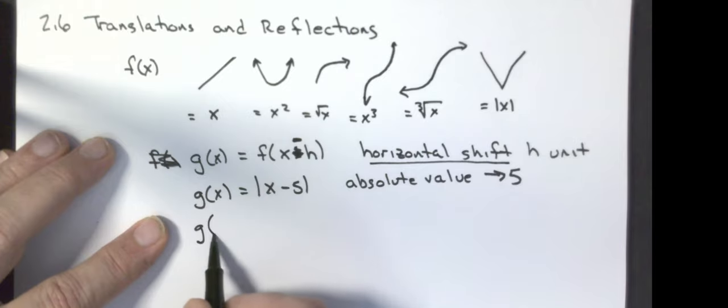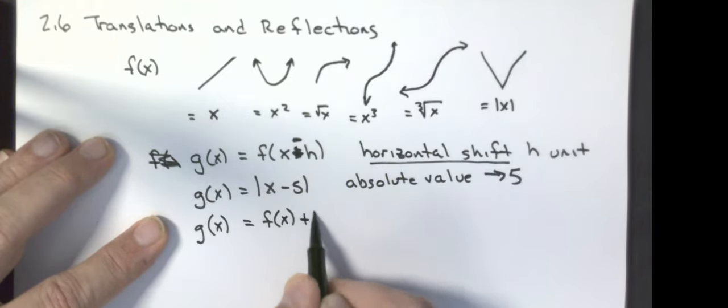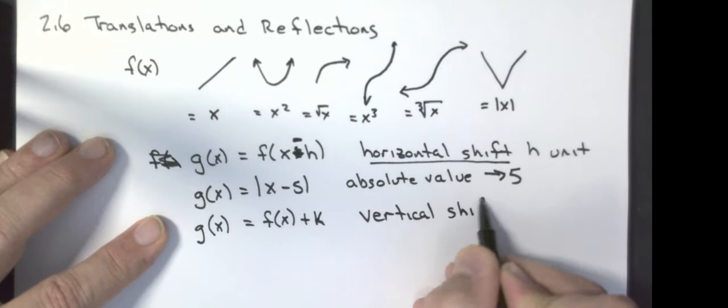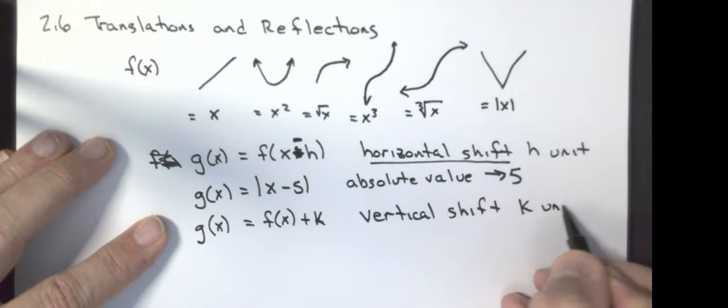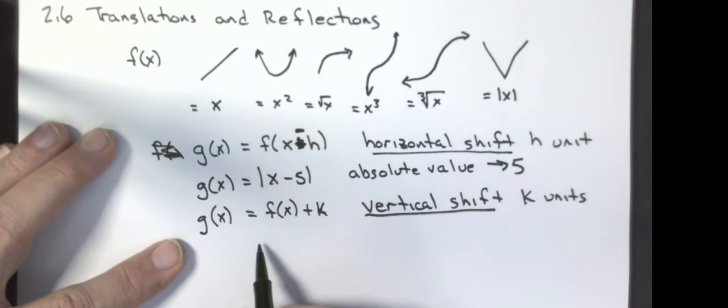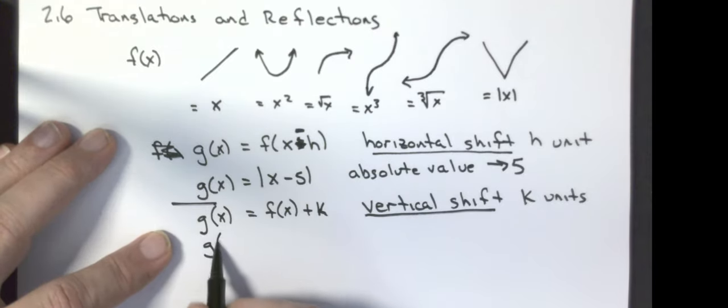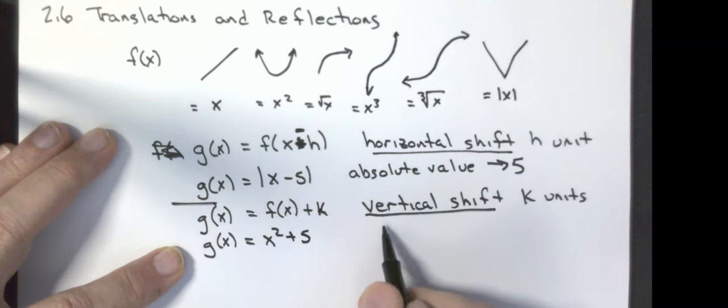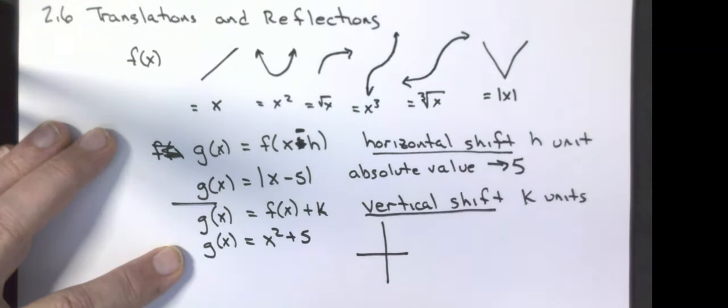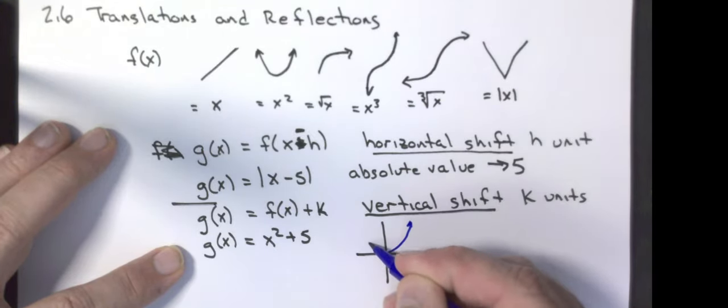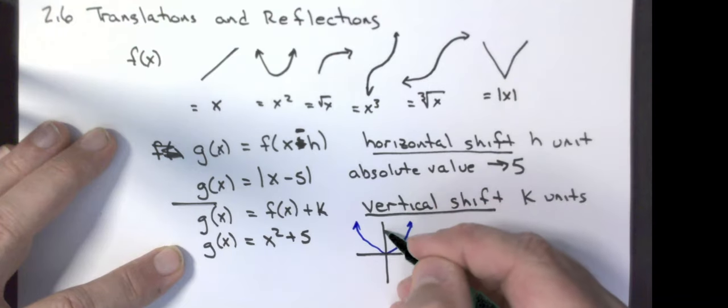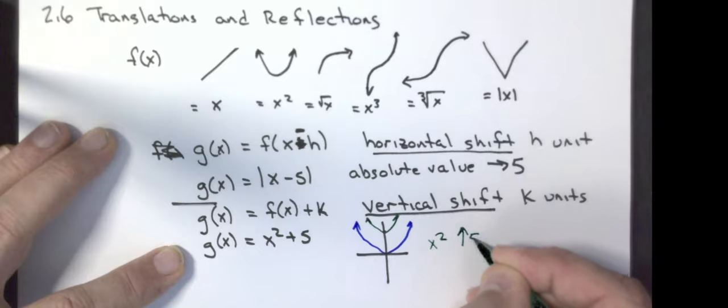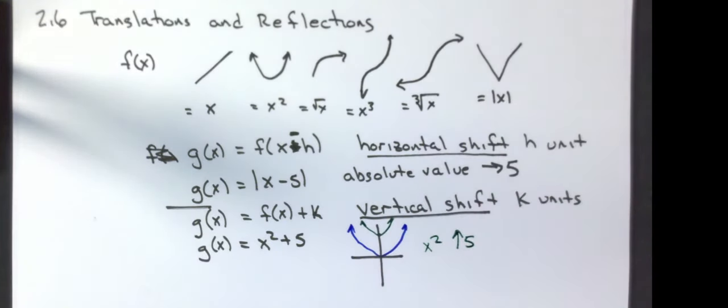I can shift my graph left and right. I can do g of x equals my original function plus some k. This is a vertical shift k units. For example, g of x equals x squared plus 5. My x squared graph is this blue one. My new graph would be this graph just moved up 5. This is x squared shifted up. I can combine those two, do two shifts.